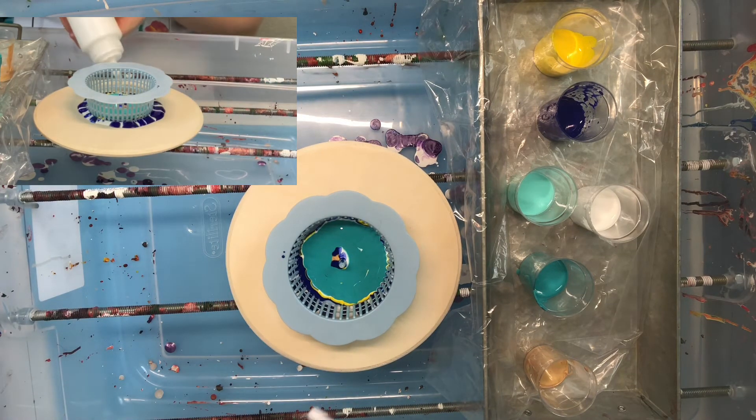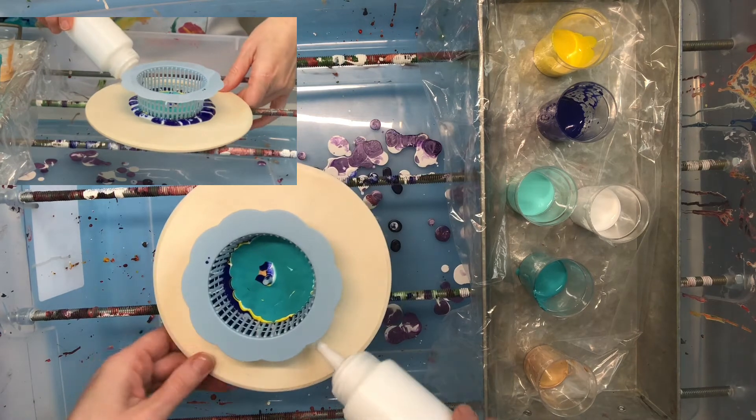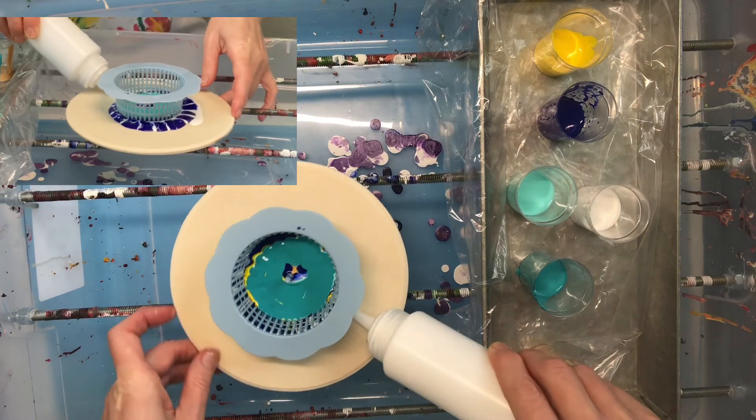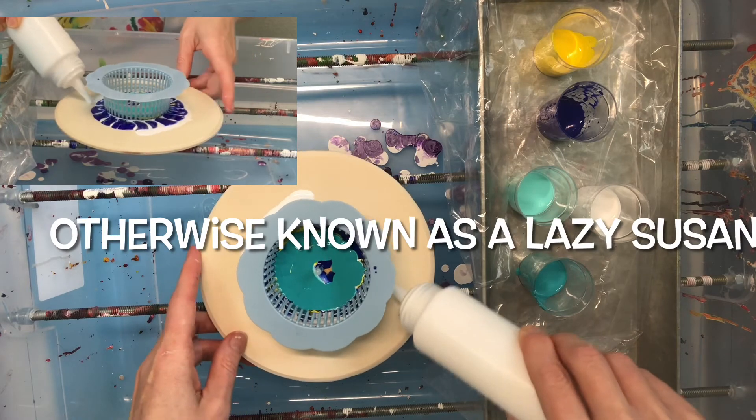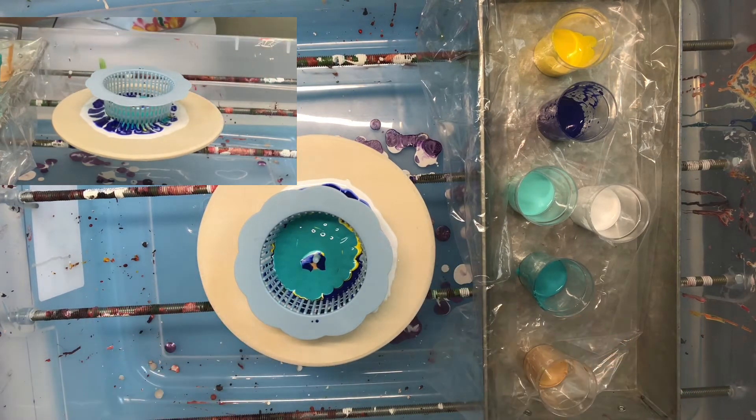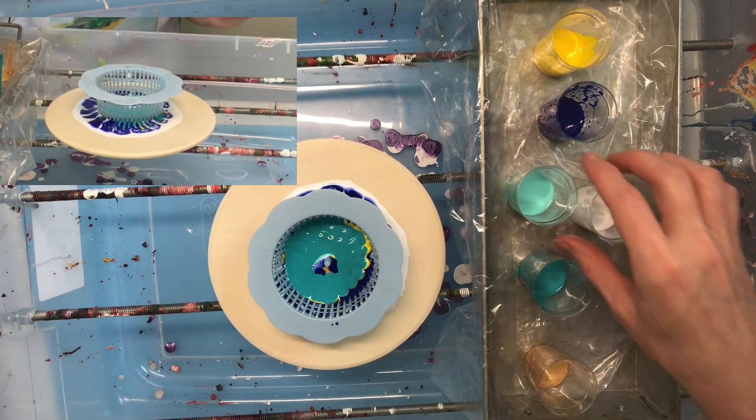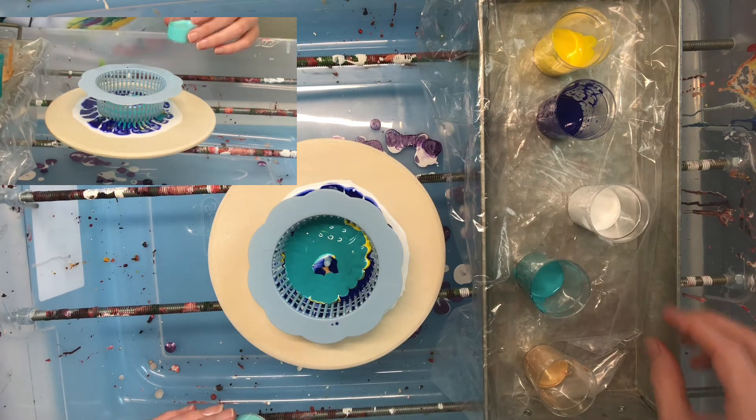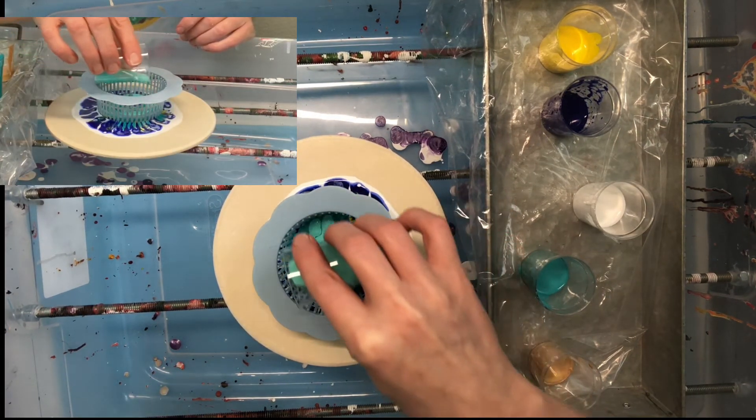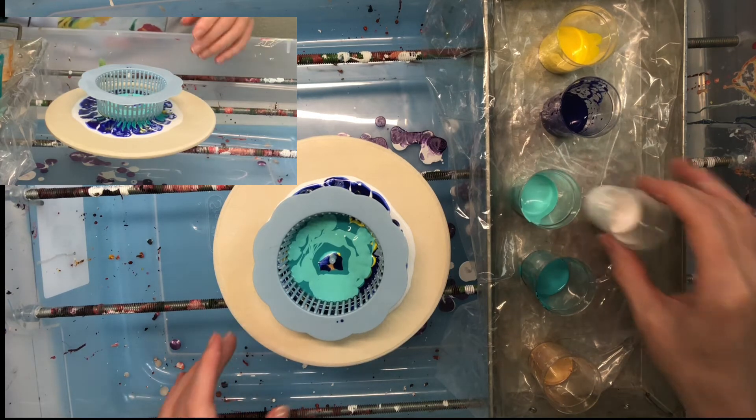And I'm also going to add a little white paint on the outside because, whoops, I better be careful not to turn it. Probably should have put this, because it's round, we could have put this on a spinner. We'll do it the old-fashioned way. Okay, now I'm going to choose to use, I think I'm going to go ahead and put my viridian.